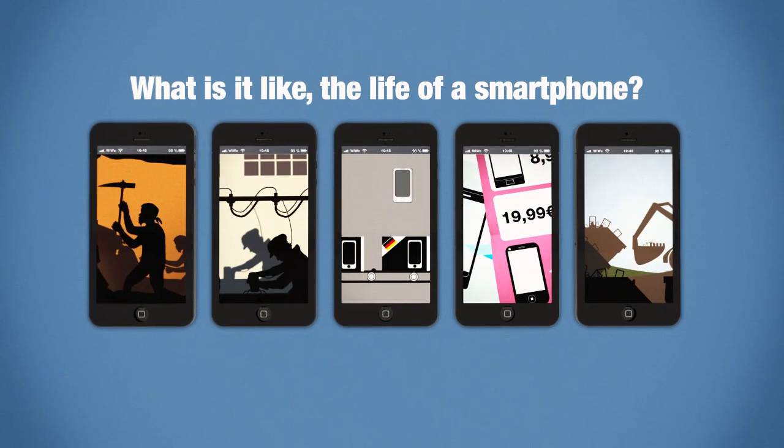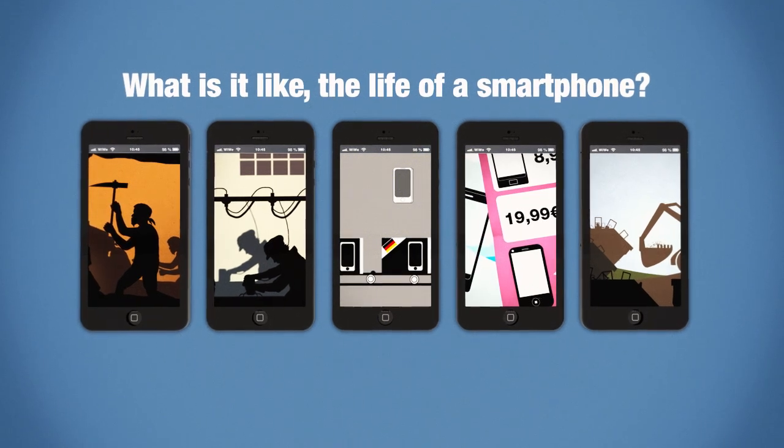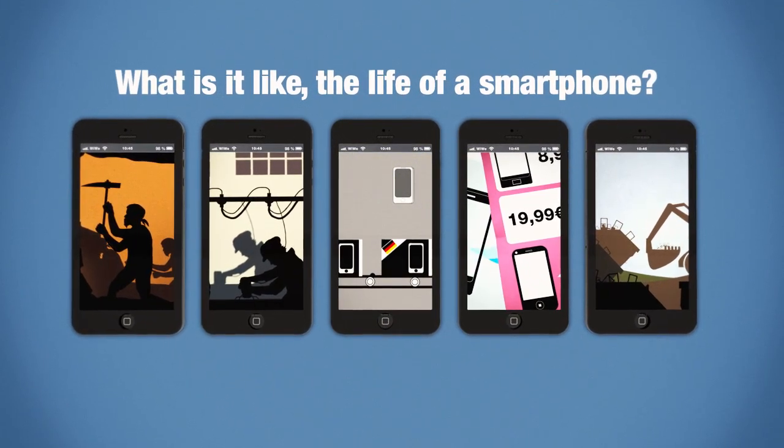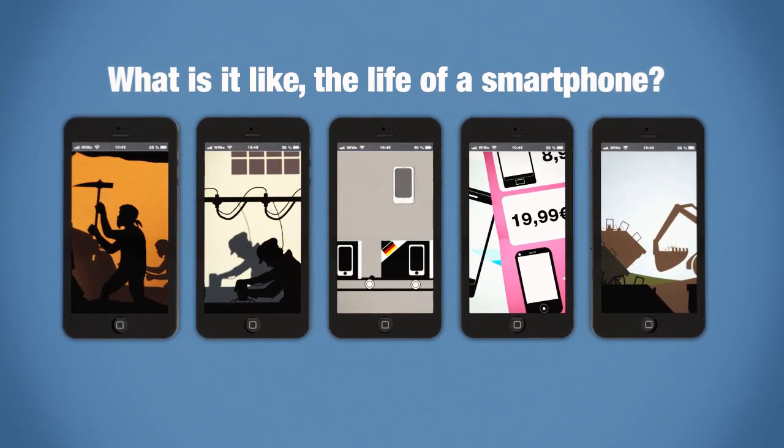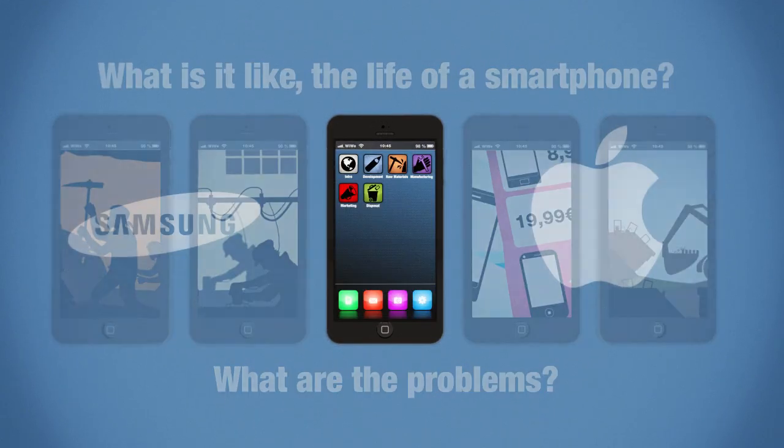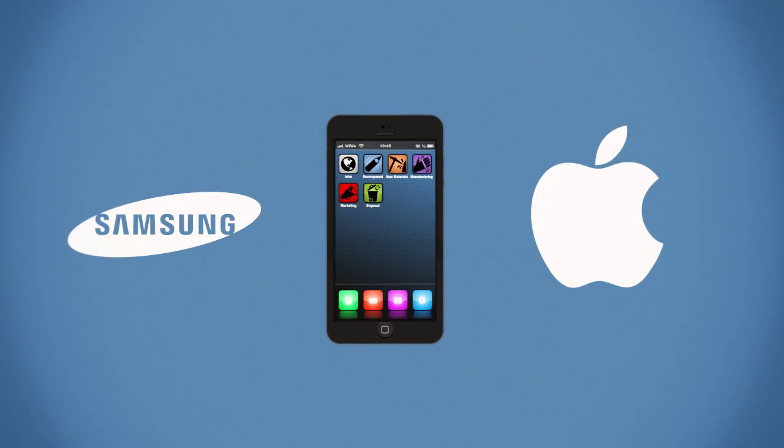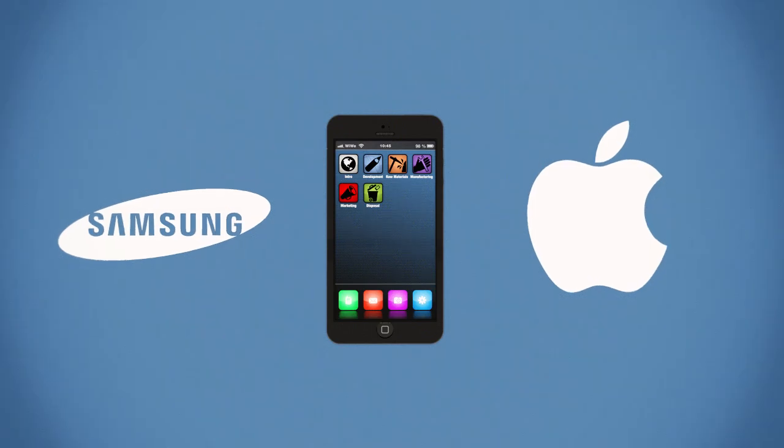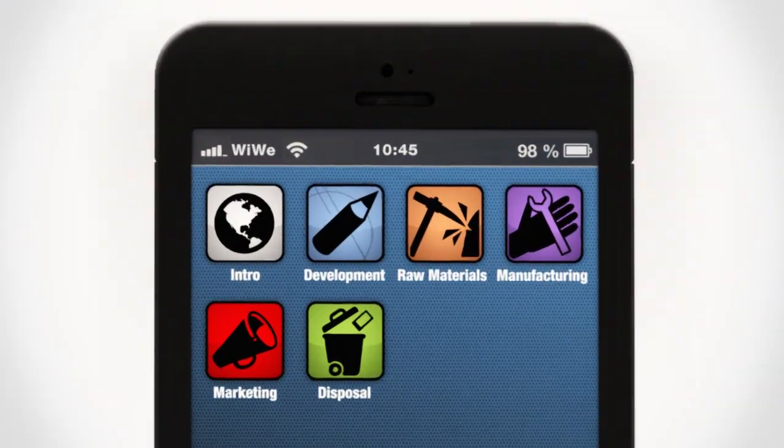So what's it like, the life of a smartphone, from the extraction of raw materials through to processing, distribution, usage, and disposal? And what are the problems in each phase? Let's take a smartphone, say from Apple or Samsung, as an example and look at this chain.